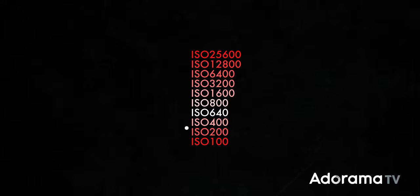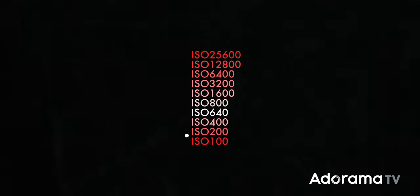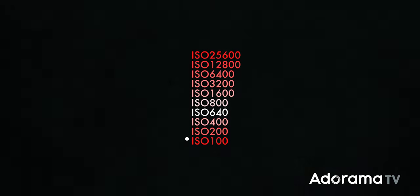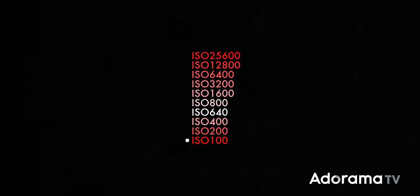Another setting that you don't change that frequently, but that's still worth keeping an eye on, is your ISO. Mainly, you should make sure you haven't bumped your ISO down below the native ISO — for example, shooting at ISO 100 when your camera's native ISO is 640.